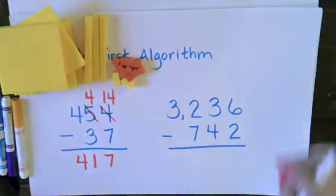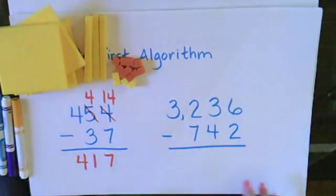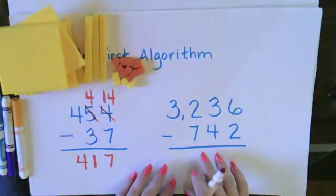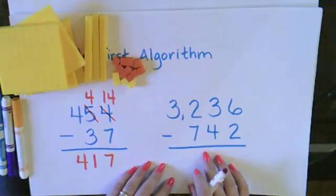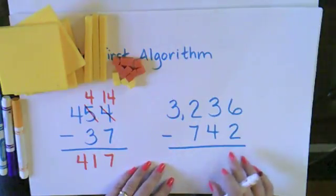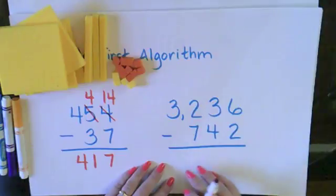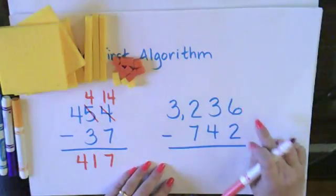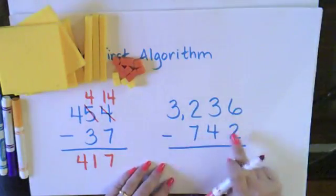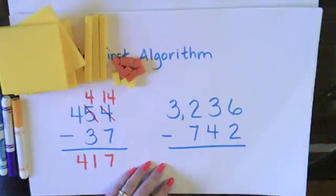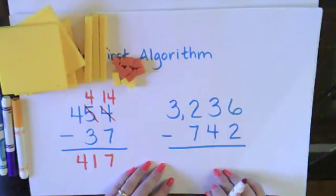Now we're going to go to a more complex problem where I'm going to be doing more trading. I look at my 1s place. I see I have 6 1s and I need to take away 2 1s. Can I do it? Yes, I can. So I don't need to do any trading.